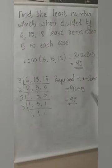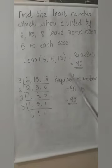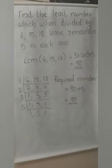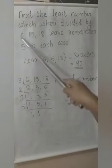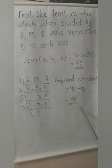Why are we adding 5? Because 90 is divisible by 6, 15 and 18 — if we divide 90 by any of these, we get remainder 0. But the question asks for remainder 5, so we add 5 to 90, giving 95. When we divide 95 by 6, 15 or 18, we get remainder 5.